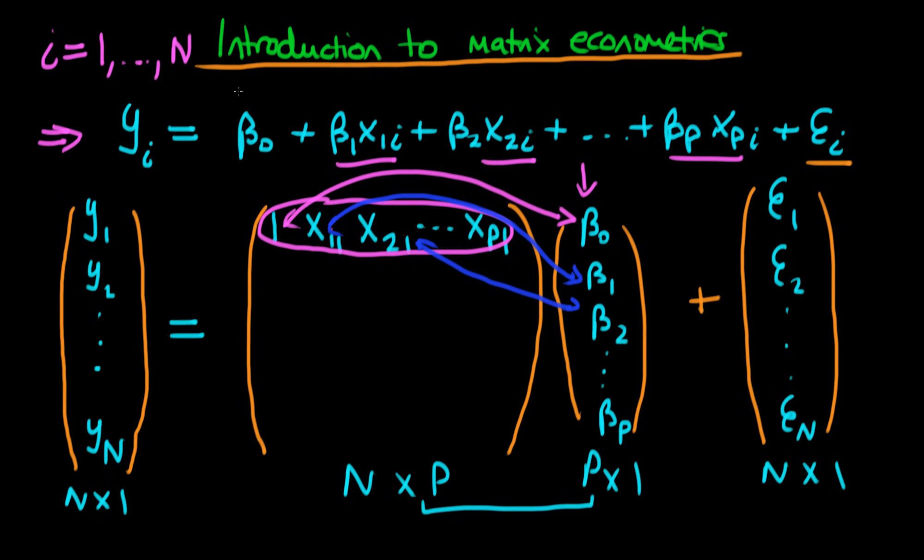So if I was to write out this first row explicitly, what we would have is we would have 1 times beta 0, which is just beta 0, plus x11 times beta 1, which is just beta 1 times x11, and then the third part would then be plus beta 2 times x21, and we continue all the way up to adding beta p times xp1. And then if we were to add on now the error term for this first row, we will then just get an epsilon 1.